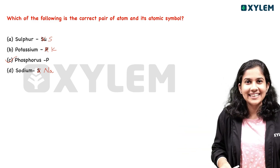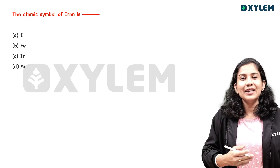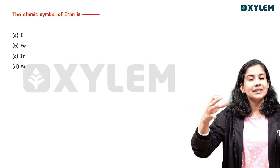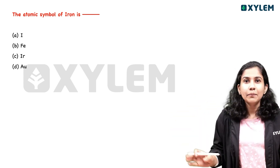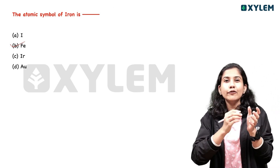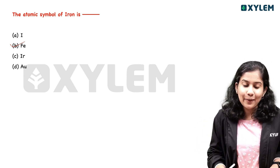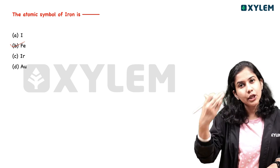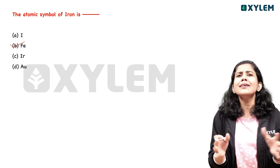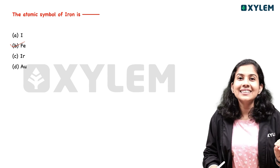The atomic symbol of iron — if you say I-R-O-N, we will miss marks on MCQs. The correct symbol is Fe. Fe is the symbol we use. We will definitely learn this along with a few chemical symbols for chemical reactions. It is very simple and we will learn this.